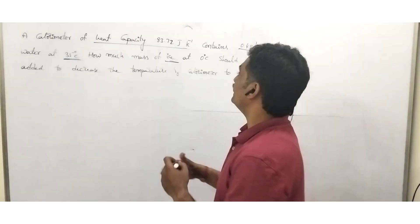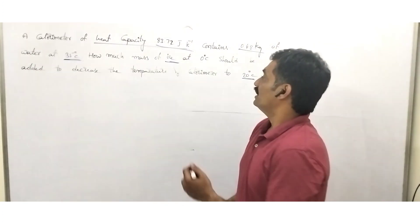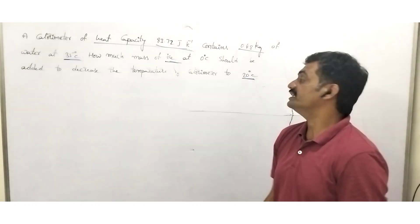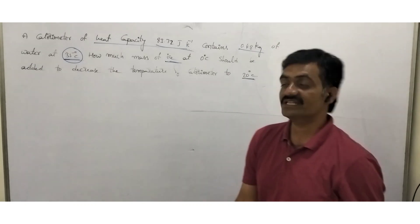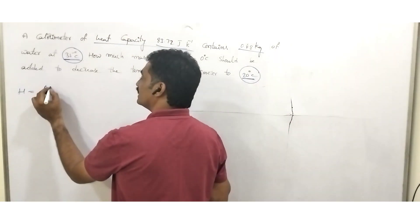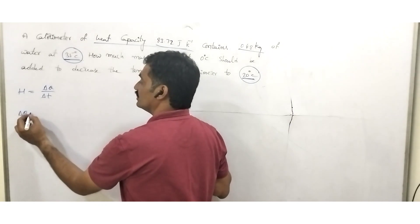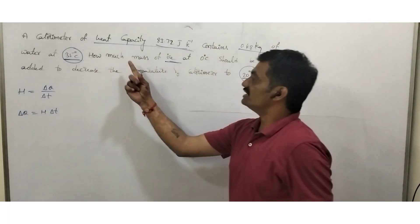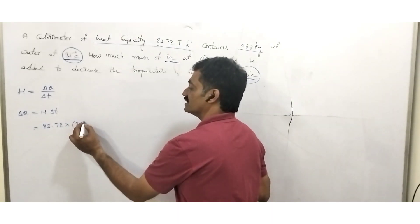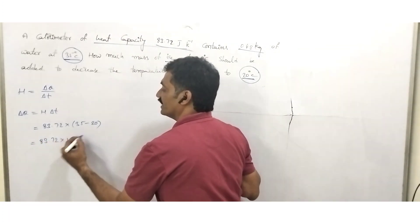Next question: a calorimeter of heat capacity 83.7 joules per kelvin contains 0.48 kg of water at 35°C. We have to find how much ice at 0°C should be added to decrease the temperature of the calorimeter to 20°C. The initial temperature of the calorimeter along with water is 35°C, and we need to decrease it to 20°C. We know that heat capacity is represented as ΔQ/ΔT. Based on that, ΔQ = H × ΔT, where H = 83.72 joules per kelvin, and change in temperature is 35 − 20 = 15, giving 83.72 × 15.